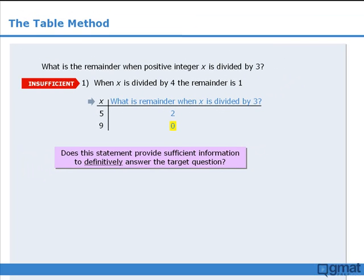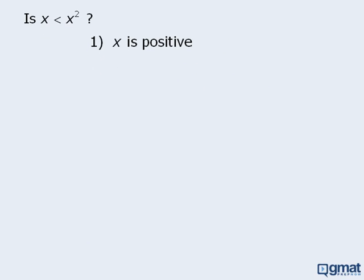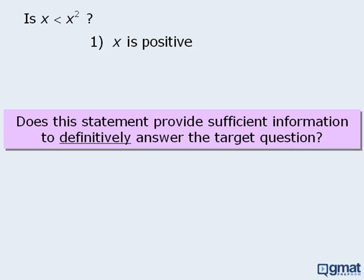Now let's look at one more example. The target question here asks: is x less than x squared? Statement 1 tells us that x is positive. Does this statement provide enough information to answer the target question? We'll use a table to organize our results. First, we'll choose some values for x that satisfy the condition in statement 1 that says x is positive. Then using these values for x, we'll ask our target question: is x less than x squared?